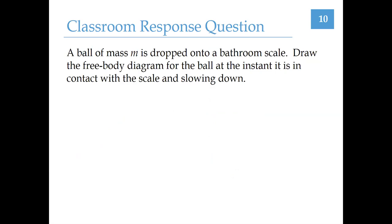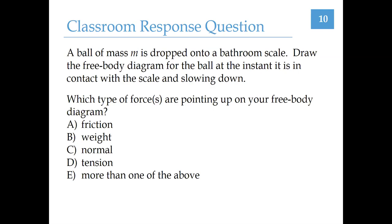Let's consider this situation: we've got a ball of mass M that is going to be dropped onto a bathroom scale. I want you to draw the free body diagram for that ball at the instant it first comes into contact with the scale and begins to slow down. Here's the first question — go ahead, read it, pause the recording, and submit your answer to Gradescope. We need to think about what type of forces are pointing up on our free body diagram. At the instant the ball comes into contact with the bathroom scale, the scale should be exerting an upward normal force on that ball. So the correct answer is C.